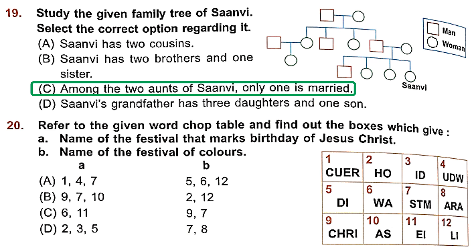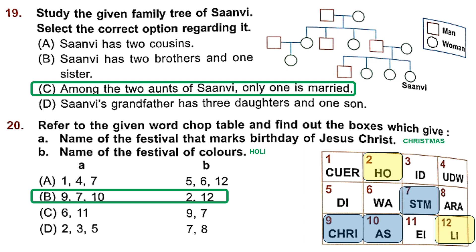Question 20: Find the boxes in the word chalk table that give the name of the festival marking the birthday of Jesus Christ. That is Christmas — boxes 9, 7 and 10. Then find the name of the festival of colors — that is Holi, given by boxes 2 and 12. The correct option has A as 9, 7, 10 and B as 2, 12. That is Option B.